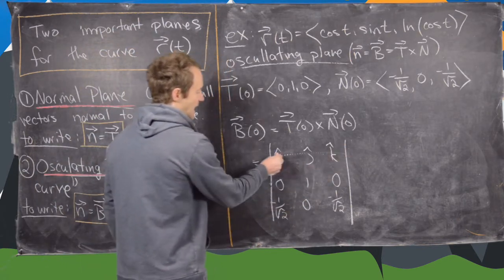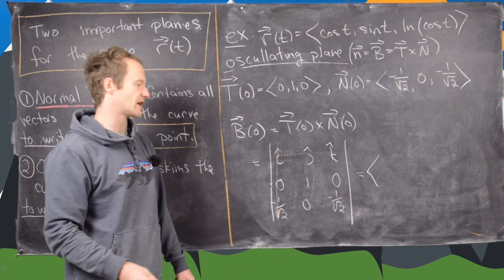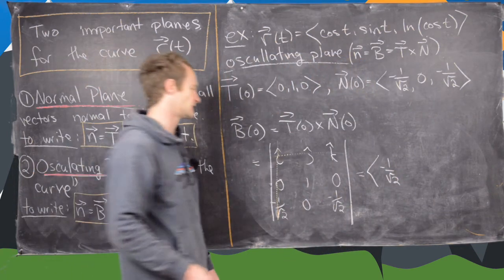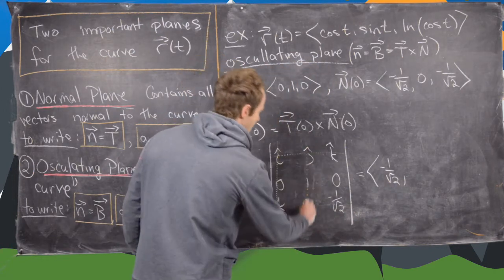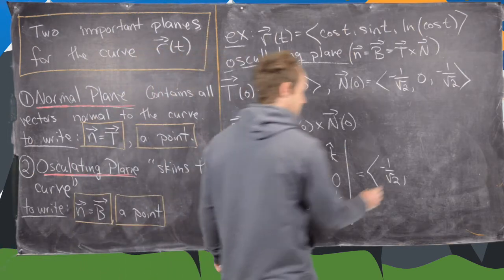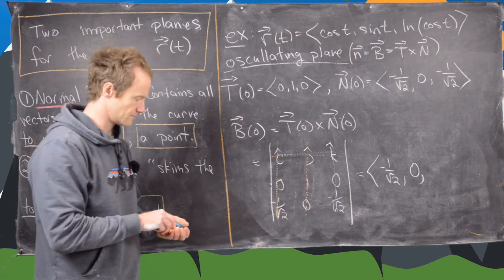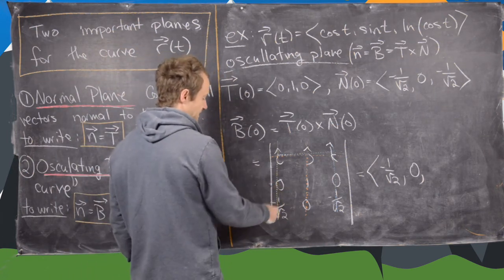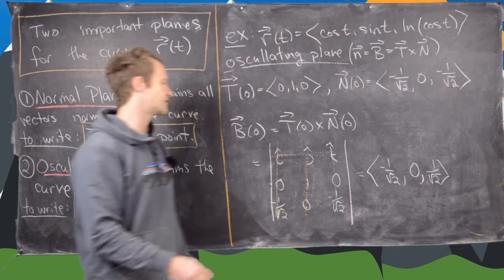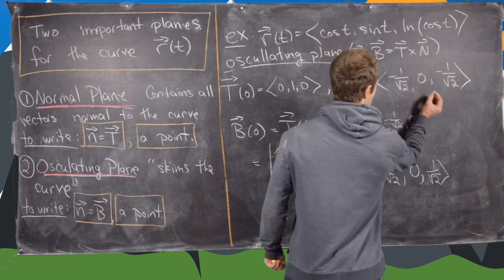Expanding by the first row: the i-component gives −1/√2 (from ad − bc). The j-component gives 0 because zeros are flanking it. Expanding by the first row and third column for the k-component: we get 0 minus (−1/√2), which is positive 1/√2. So our binormal vector is (−1/√2, 0, 1/√2).